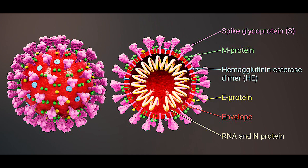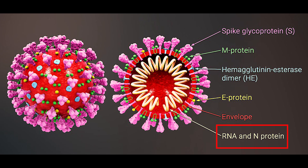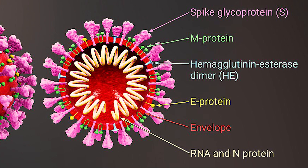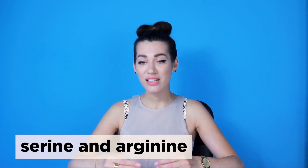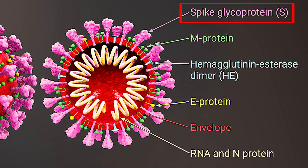SARS-CoV-2 contains four structural proteins and 16 non-structural proteins. The nucleocapsid protein (N) forms the capsid outside the genome, and the genome is further packed by an envelope associated with three structural proteins: membrane protein (M), spike protein (S), and envelope protein (E). The N protein packages viral RNA into helical ribonucleocapsid and interacts with other structural proteins during virus assembly. It is produced in high abundance during infection and is highly immunogenic, consisting of two domains rich in serine and arginine amino acids. The spike S protein of the virus is also rich in arginine.